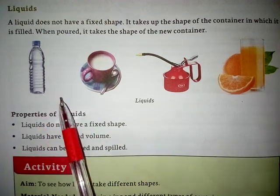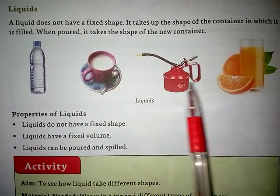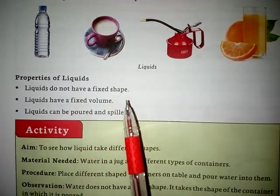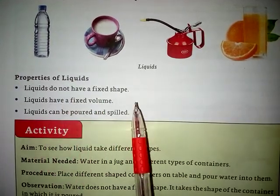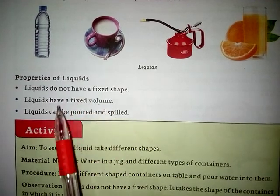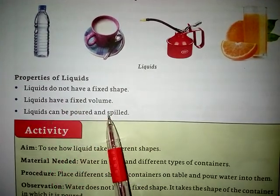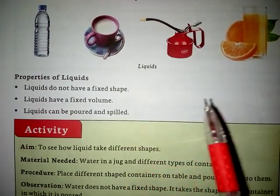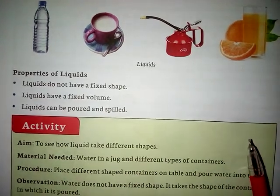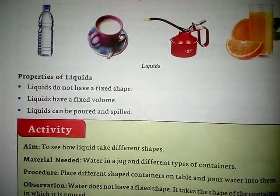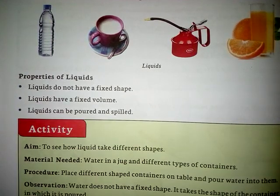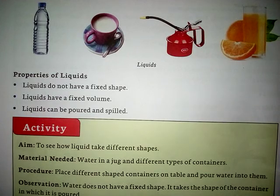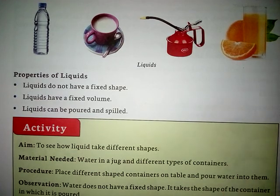Liquids kaun kaun hote hain? Jaise water, tea, oil, juice — yeh sab kya hain? Liquids hain. The properties of liquids are: liquids do not have a fixed shape. Liquids ka shape fixed nahi hota. Liquids have a fixed volume — inка volume fixed hota hai. Liquids can be poured and spilled. Inhe kahin bhi pour kiya ja sakta hai, ek bartan se doosre bartan mein aasaani se odela ja sakta hai. Yeh open surface pe nahi rakhe ja sakte — yeh flow kar jaate hain. Agar hum water ko table pe rakhenge toh woh flow kar jaayega, bah jaayega.